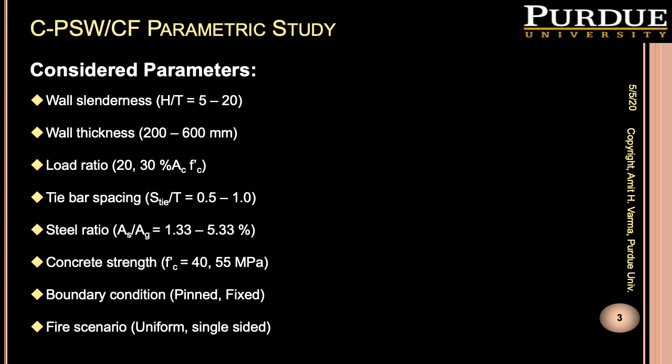The parameters considered in this parametric study were the wall slenderness ratio or story height to wall thickness ratio, wall thickness, applied axial loading ratio, tie bar spacing to wall thickness ratio, steel plate reinforcement ratio, concrete strength, boundary conditions, and heating uniformity. The range of the parameters was selected based on typical values in design documents, literature, and current industry design practice.